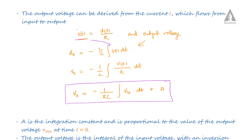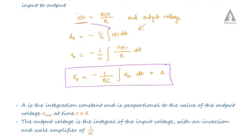V0 is equal to minus 1 by RC, integral of Vin dT, plus A. Here A is the integration constant and is proportional to the value of output voltage V0 at time T equal to 0. The output voltage is the integral of the input voltage, with an inversion and a scale factor of 1 by RC. Inversion means that when the input voltage is positive, the output voltage is negative — a decreasing voltage.